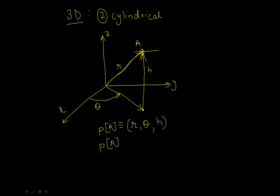In cylindrical coordinates, we state that the position of object A is at some radius R, with some angle theta from the x-axis, and at some height H from the xy plane. More commonly in engineering and scientific texts, the nomenclature uses radius R, azimuthal angle phi (the reference angle from a reference axis, in our case x), and height z instead of H. So z tells you that this distance is from that plane. That's how you would portray the position of an object A in cylindrical coordinates.